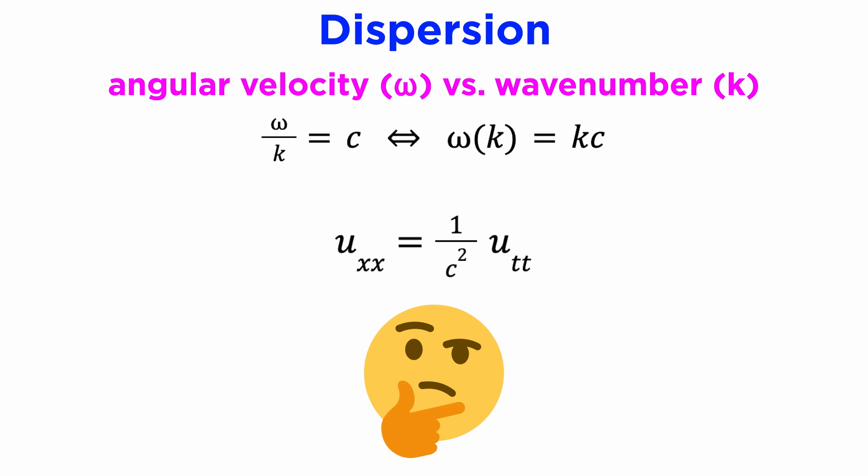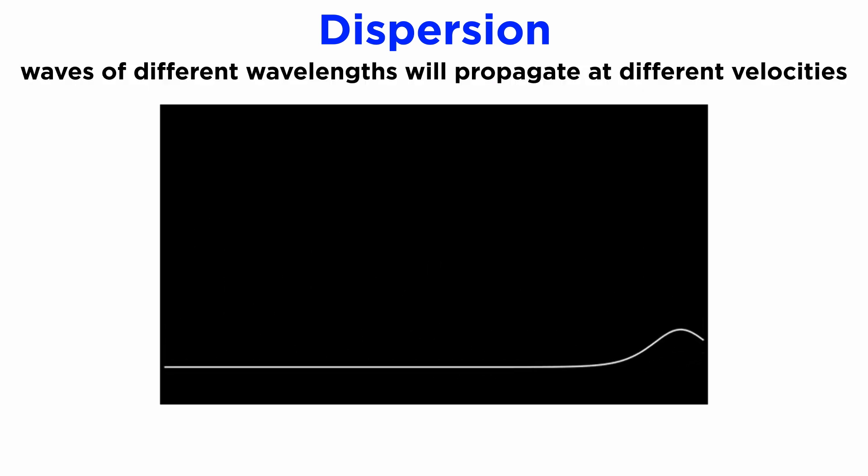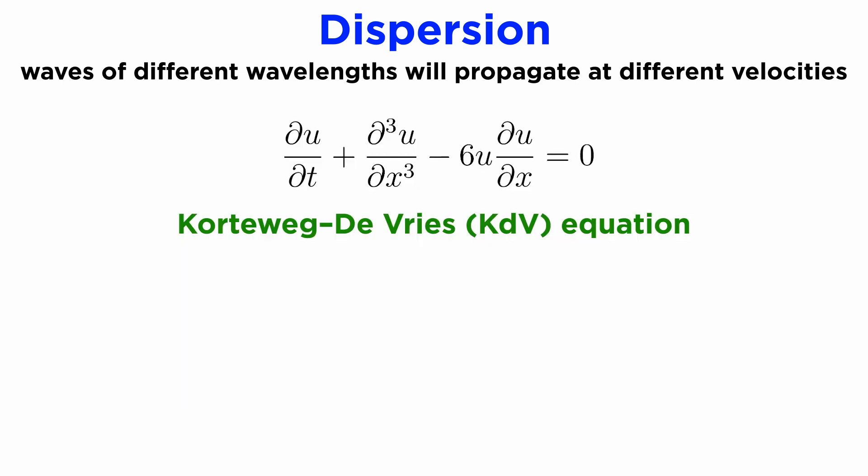Just because something looks like a wave, it doesn't mean that it can be modeled by the same wave equation as uxx equals 1 over c squared utt. Many systems exhibit what is known as dispersion, wherein waves of different wavelengths will propagate at different velocities, and these are usually modeled using more advanced PDEs, such as the third order wave-like PDE called the KDV equation.